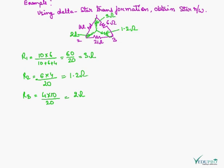This is how we convert the delta network into star network. This is R1, which is 3 ohm. This is R2, which is 1.2 ohm. And this is R3, which is 2 ohm.